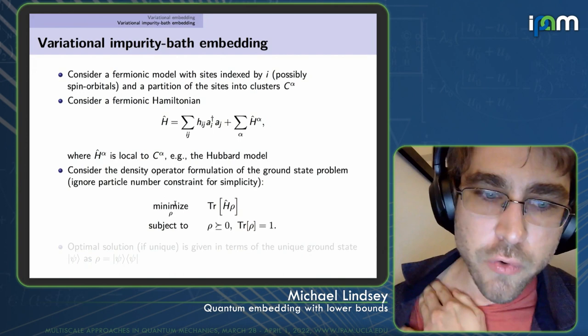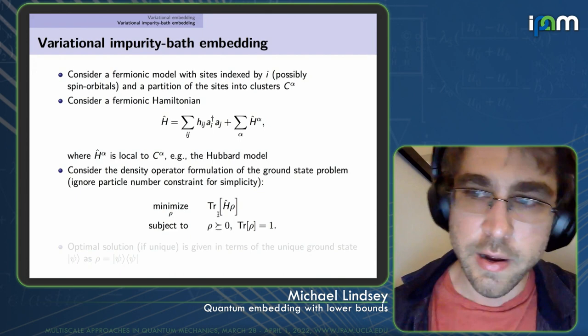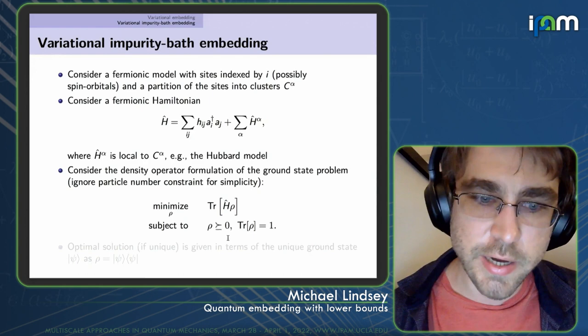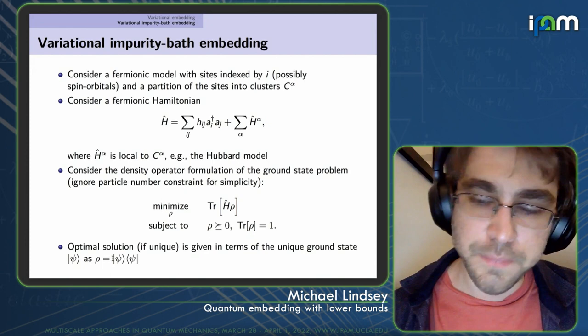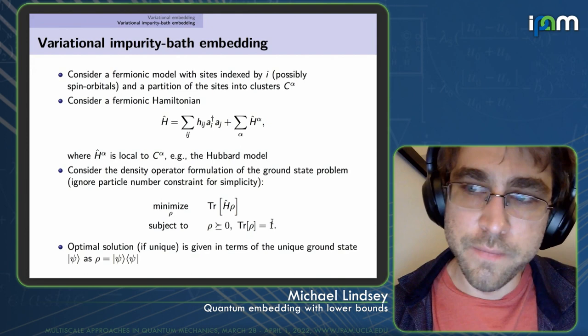We use the density operator formulation of the ground state problem: minimize the trace of the Hamiltonian against the density operator, subject to the usual density operator constraints. Again, the optimal solution corresponds to the unique ground state. A particle number constraint can also be included but is left out for simplicity.